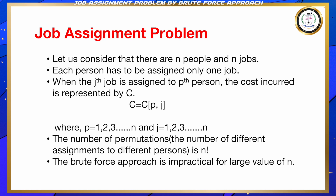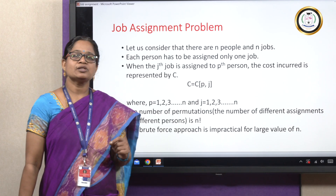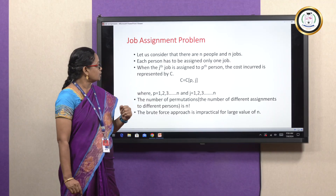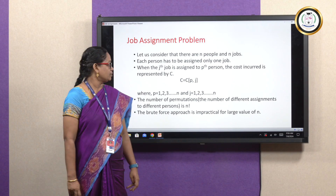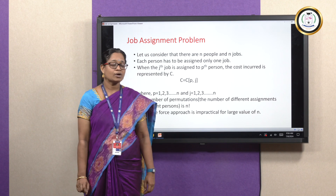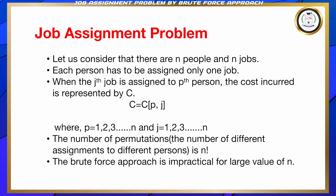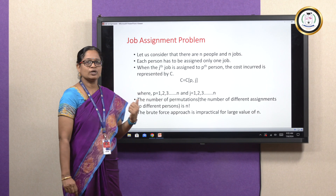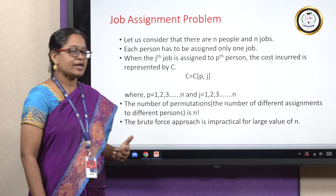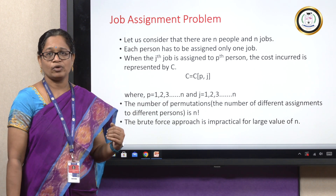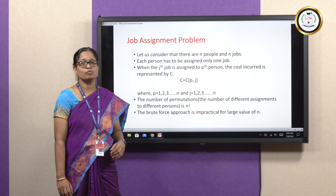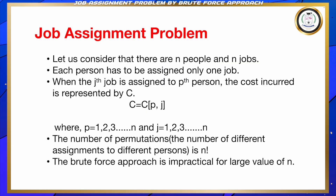Let us consider that there are N people and N jobs. Each person has to be assigned only one job. The cost incurred is represented by C, where C = C(P, J). Here P represents the person and J is the job. When the Jth job is assigned to the Pth person, the cost incurred is given by C(P, J), where P ranges from 1 to N and J also ranges from 1 to N. The total number of permutations is given by N factorial, and this problem we are going to solve by brute force approach.